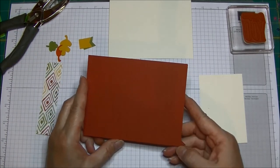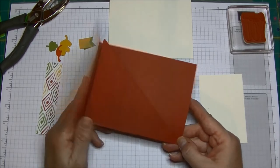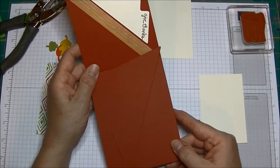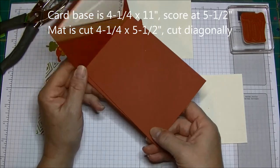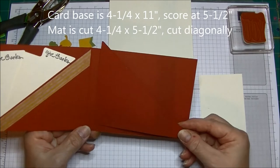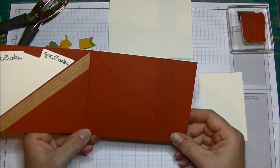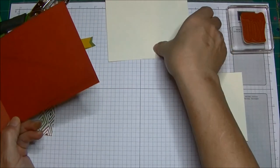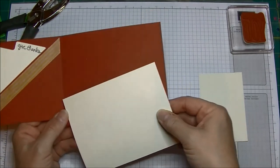So I started out with a piece of Cajun Craze. I cut it at 4 1/4 by 11 and scored it at 5 1/2, folded it over like this. Then I took the second piece of Cajun Craze and I cut it in half at 5 1/2, and with that 5 1/2 you can see I've got two pockets here.